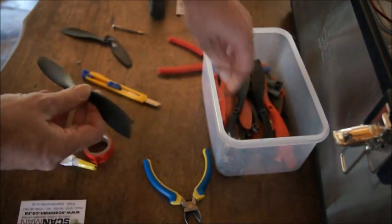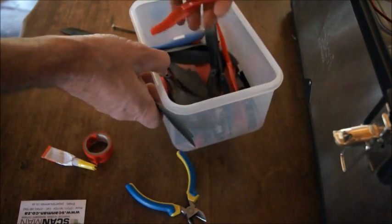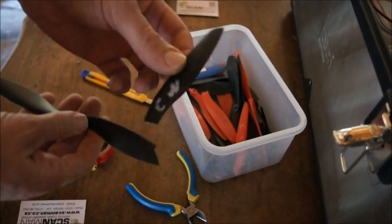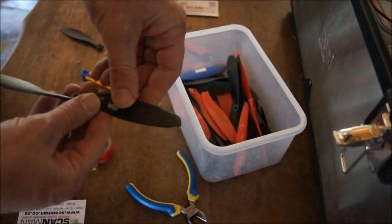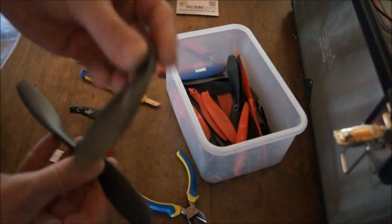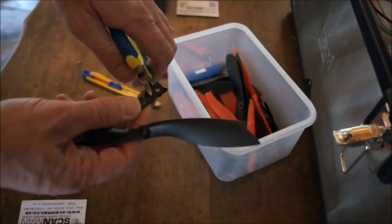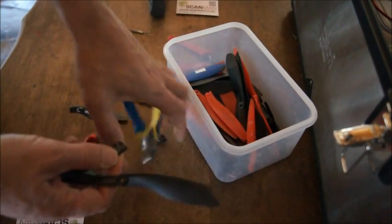So you take your blade, look for any matching blade halves, just match them up. Even if it's got the thing on it like that, just clip that off.